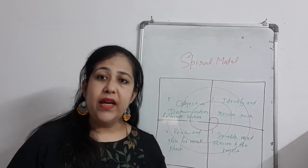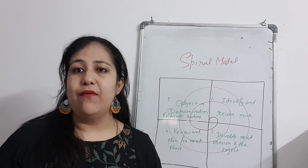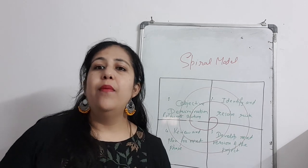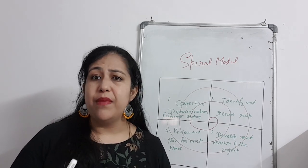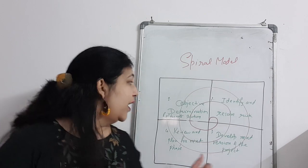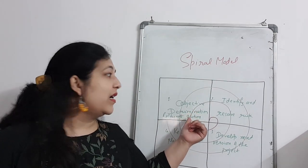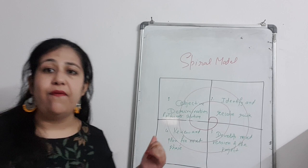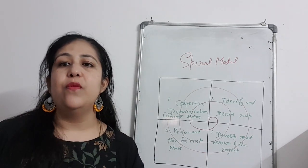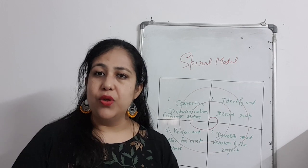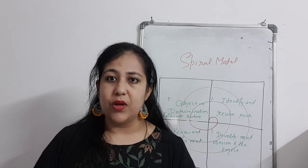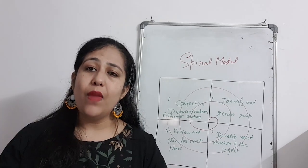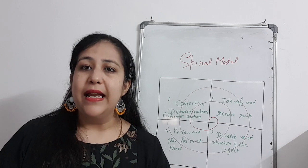Then we go to the fourth quadrant and review what we have done. If we are satisfied, we move on to the next phase. If there is still a problem, we do not proceed and instead go through the quadrants again — identifying risks and iterating. This continues until you are satisfied with one phase. Each phase passes through all 4 quadrants, ensuring the work of that phase is successfully completed as planned.